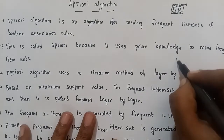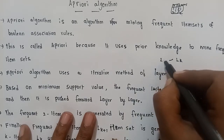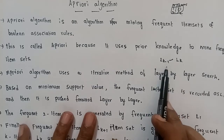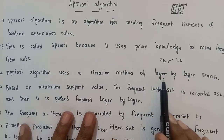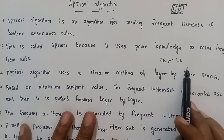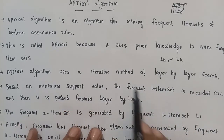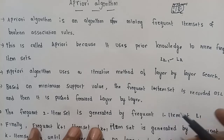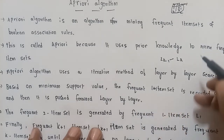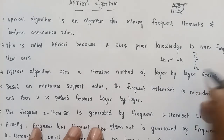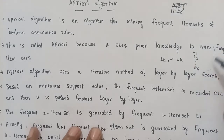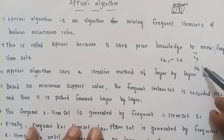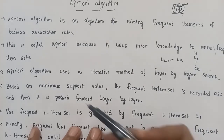We will generate item sets. Suppose we generate LK items — we will use LK-1 knowledge to generate the LK set. This is an iterative method that proceeds layer by layer. It repeats through linked levels: L1, L2, and so on, until it creates LK.